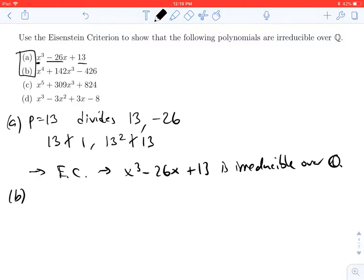In B, just looking for a prime that divides these coefficients, we see quickly that these coefficients are both even. So if p equals 2, it's going to divide all those coefficients. 2 divides negative 426, it divides 142, and of course it divides 0,